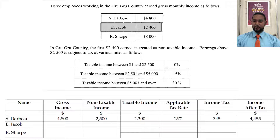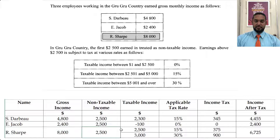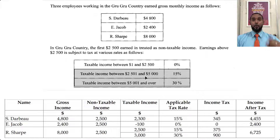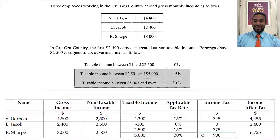For E. Jacob with my interpretation: gross income is $2,400, which is less than the non-taxable $2,500, so E. Jacob pays no tax. For R. Sharpe: $8,000 minus $2,500 leaves $5,500 taxable income, split into two brackets. The first $2,500 of taxable income is taxed at 15%, giving $375. The remaining $3,000 is taxed at 30%, giving $900. Total income tax is $1,275, subtracted from $8,000, giving income after tax of $6,725.